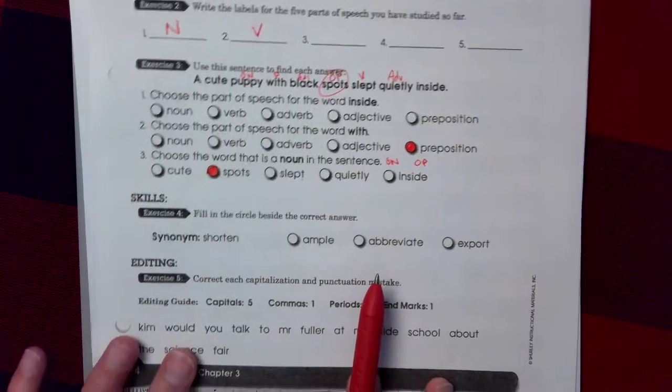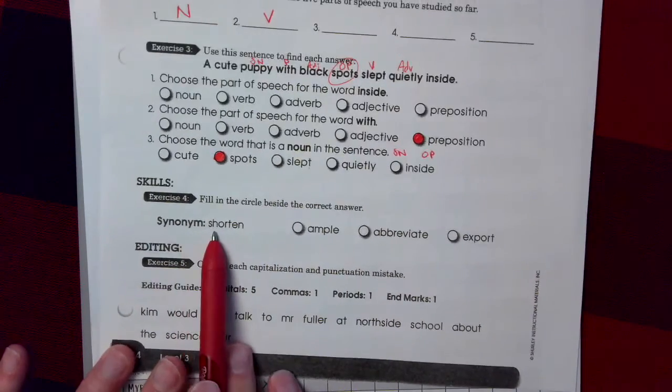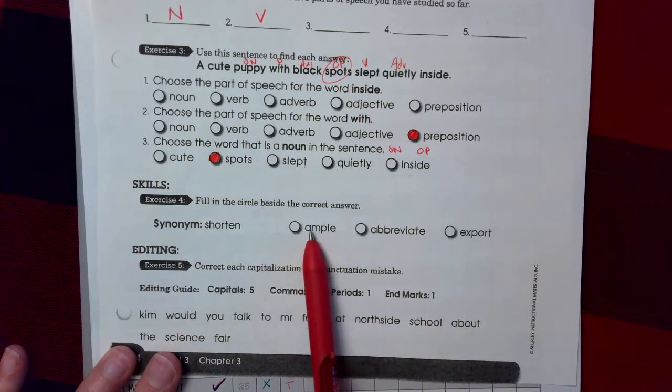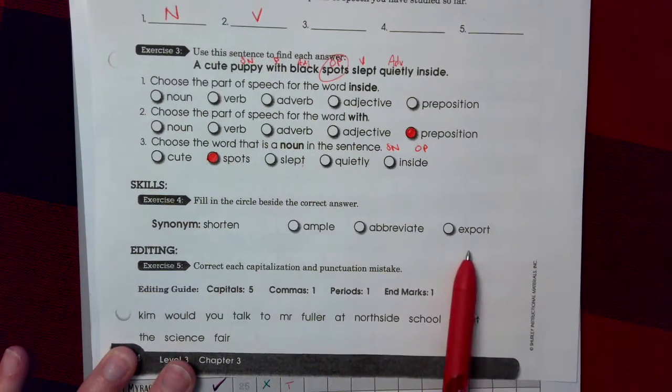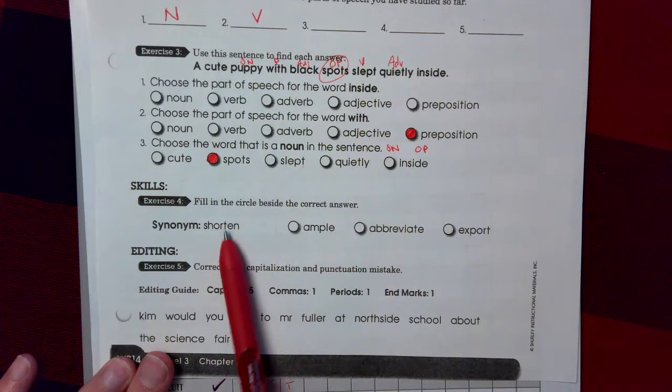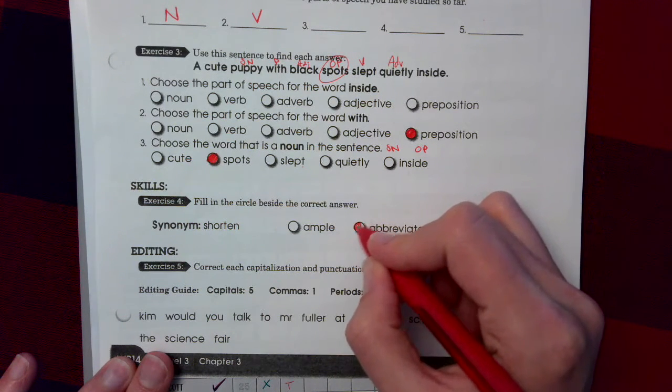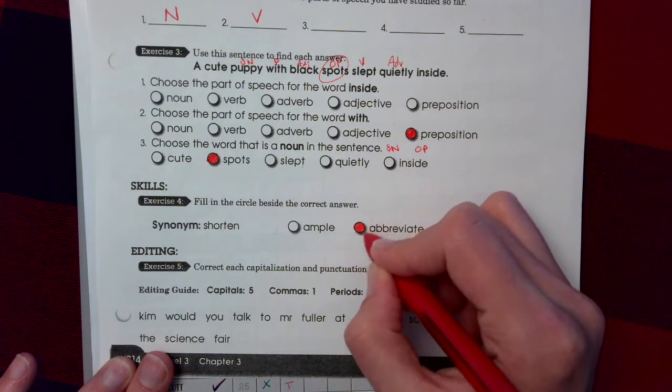Exercise 4. Fill in the circle beside each correct answer. What's a synonym for shorting? You shorten something. You make it smaller. Is that ample, abbreviate, or export? Well, if you shorten something, you make it smaller, that's abbreviating it. So you put abbreviate right there.